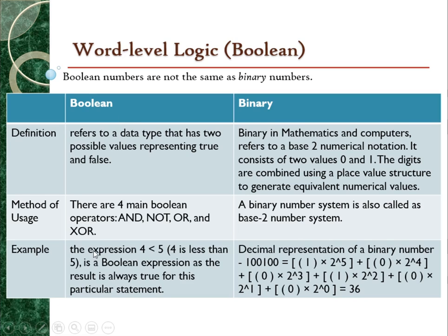For example, for Boolean, an expression like '4 less than 5' is a Boolean expression because the result is always true. While in binary, the example is the decimal representation of a binary number such as 100100. When you convert it using the base-2 number system rule, you get the decimal value of 36. So Boolean is a logic expression while binary is just a numerical notation.